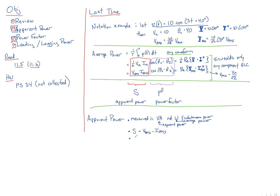Apparent power is always a scalar, not a phasor — a number like 17 volt-amps or 13 volt-amps. Average power is zero for capacitors and inductors, whereas S in general is non-zero for them. The intuition is that average power is how much heat energy is generated in your circuit, whereas apparent power also accounts for power shuttled back and forth between your load and your generator.